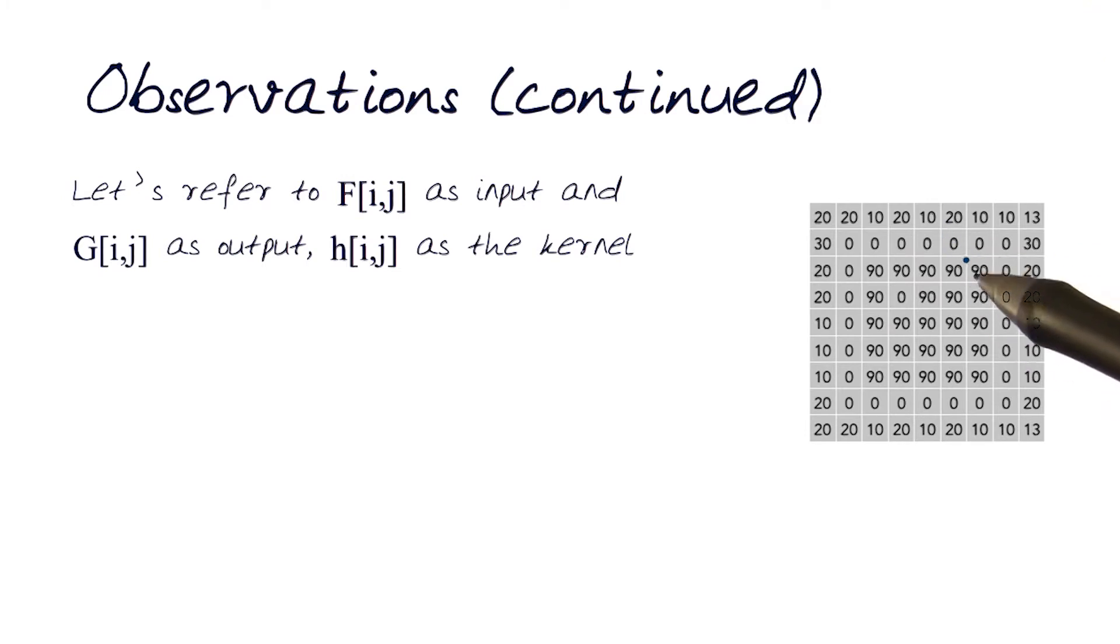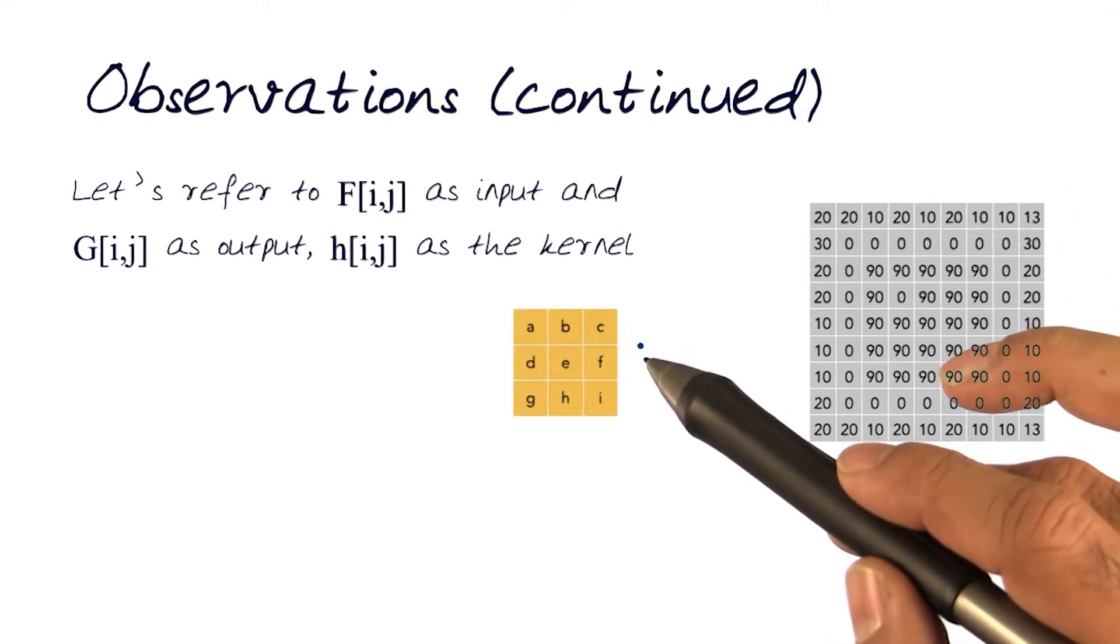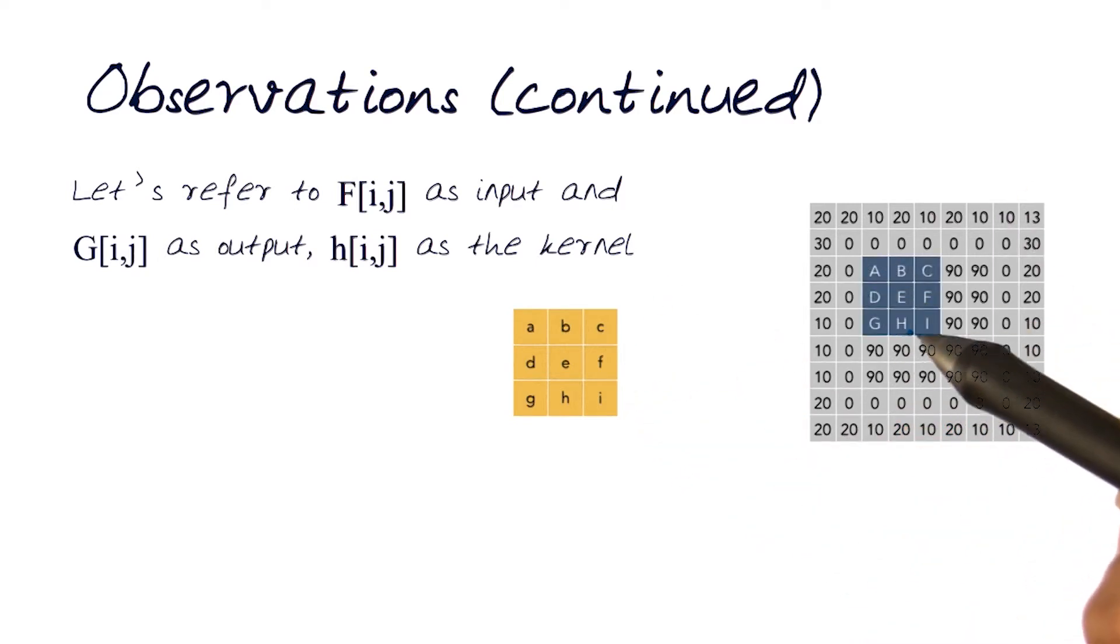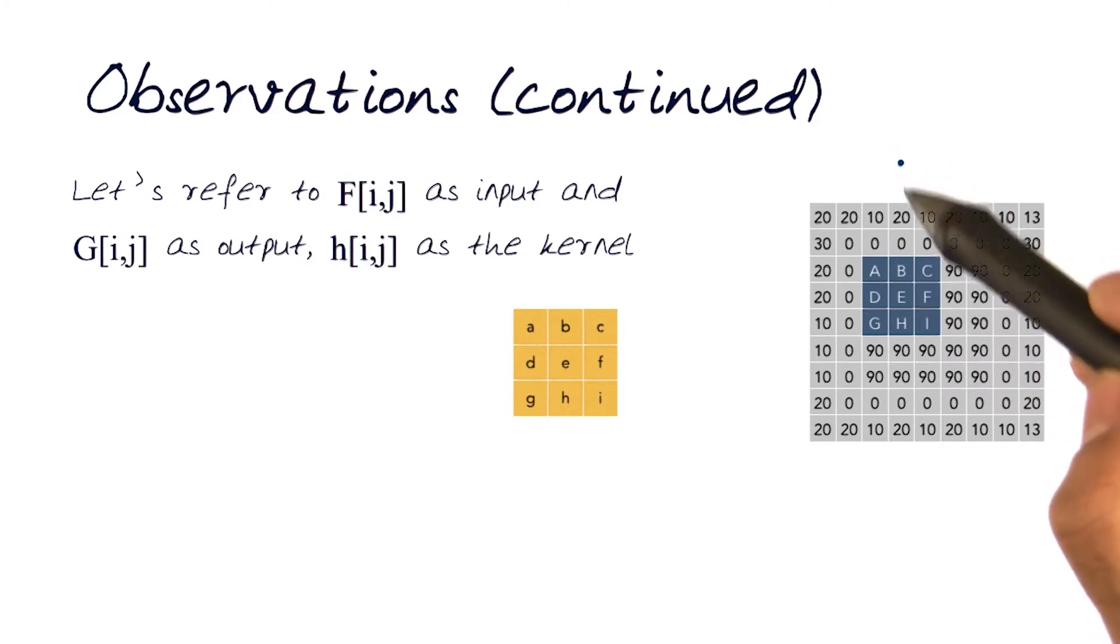Again, let's take our 9 by 9 sample image. This is our 3 by 3 kernel with k equal to 1. Just to help us do some simple math, I'm now going to take an element here with the neighborhood with i and j at 3.